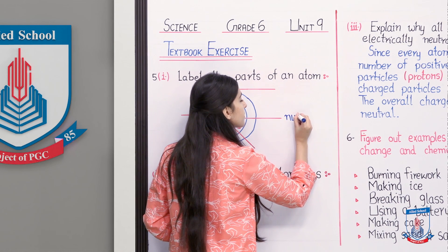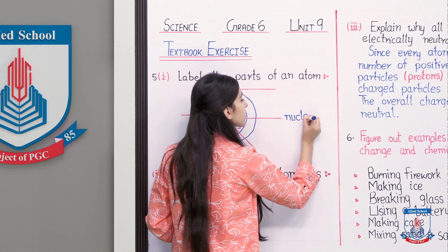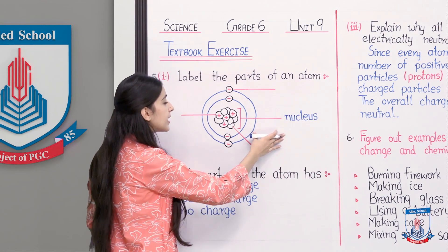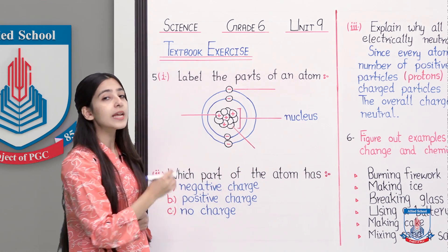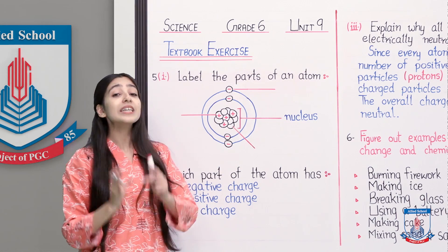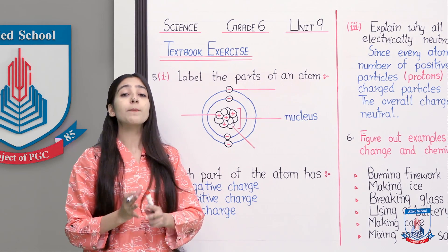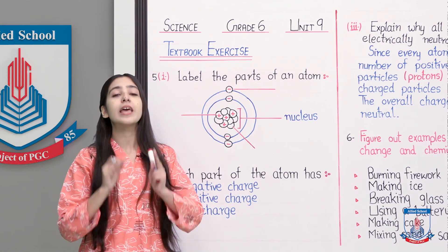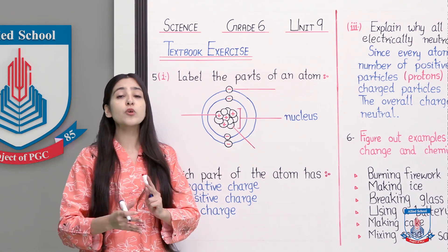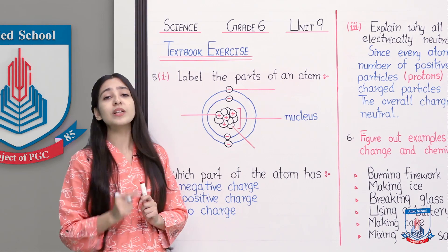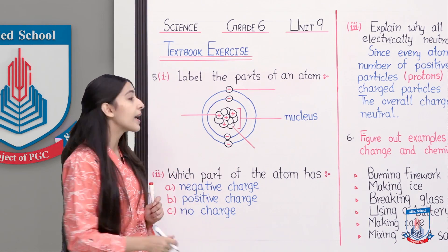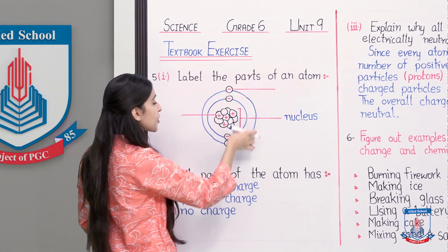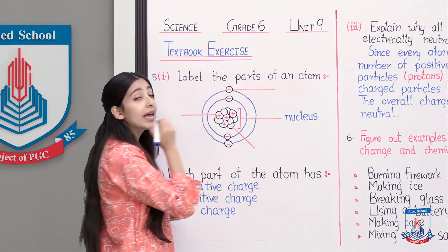The centerpiece of an atom is called the nucleus. After that, I explained that these blue colored circles indicate orbits or axes which are present around the nucleus. Inside this orbit or axis, a particle is traveling and its name is electron.